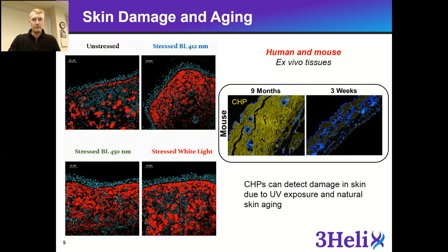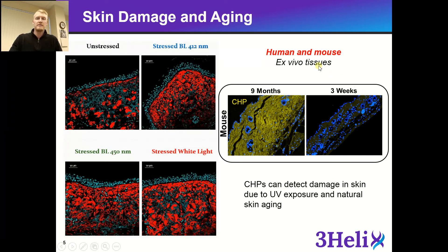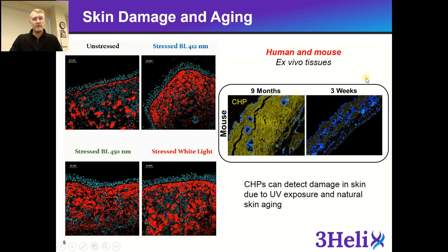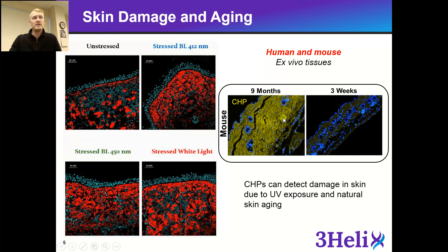We are able to target damaged collagen due to UV exposure in this example, which, as you continue to age, your body is exposed to more and more sunlight causing more and more damage. On the right-hand side, we have a mouse skin tissue — a nine-month-old mouse compared to a three-week-old mouse. As you can see, the CHP stain is in yellow. The nine-month-old mouse has a much higher level of collagen remodeling in its skin. These mice were not exposed to sunlight; this is just due to natural aging and the body not being able to repair collagen and skin as quickly.